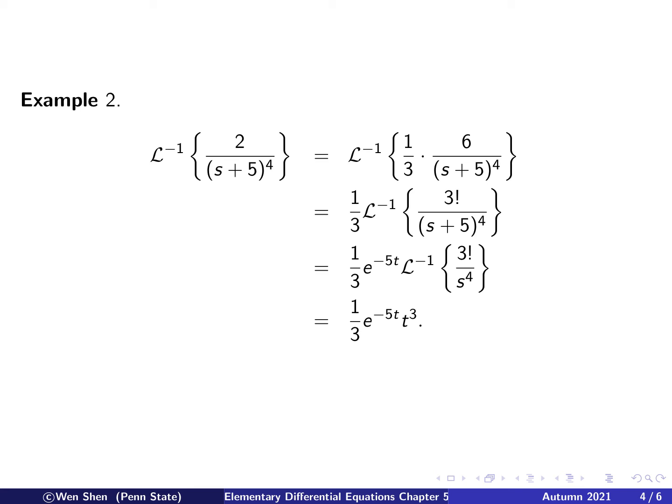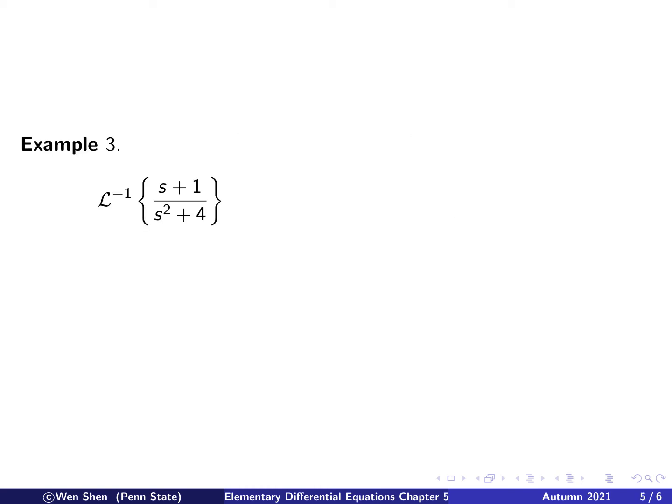So recap. We first analyzed this quite a bit before we start the manipulation. And after writing it in this form, then we did the linearity, put it out, and then we used the shift theorem number 1, change s into s + 5 into s, and then this comes out nice and easy.